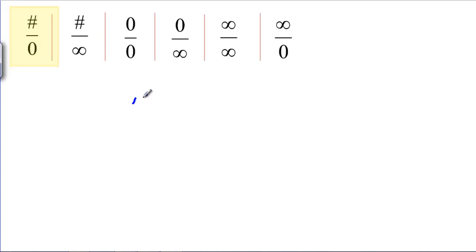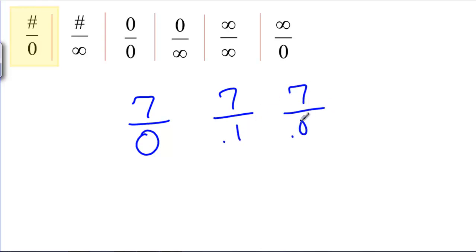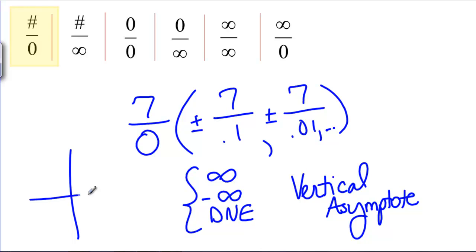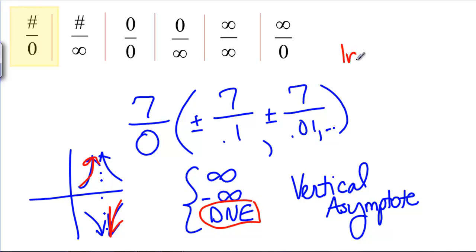First: a non-zero number divided by zero, something like 7 divided by 0. That means you have 7 over smaller and smaller numbers coming from both sides — these could be plus or minus. As the bottom gets smaller, the fraction gets bigger. This is going to be infinity, negative infinity, or does not exist. This is a vertical asymptote on the graph. We know if you're approaching from just one side you go up or down, but from both sides you could have any combination. This is not indeterminate — we just need to look a little harder to determine if it's ±∞ or DNE.